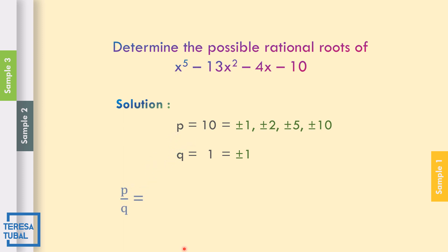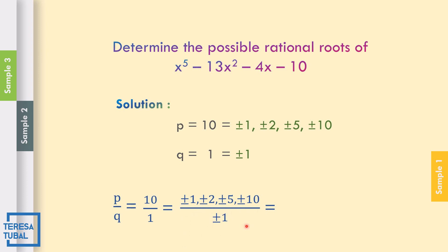Now let us divide p by q. The factors of 10 — positive-negative 1, 2, 5, and 10 — are all divided by positive-negative 1. Dividing all by 1 gives the same values: 1 divided by 1 is positive-negative 1, 2 divided by 1 is positive-negative 2, 5 divided by 1 is positive-negative 5, and 10 divided by 1 is positive-negative 10. So the possible rational roots are positive-negative 1, positive-negative 2, positive-negative 5, and positive-negative 10.